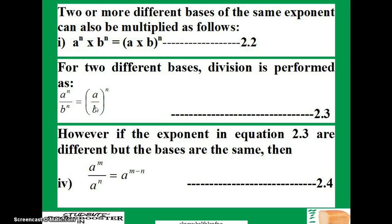However, if the exponents in equation 2.3, that's this law here, if the exponents are different but the bases are the same, then a raised to power m over a raised to power n equals a to the m minus n. The meaning here is that if you have division, the same base but different exponents, you just need to subtract them. So multiplication is addition, division is subtraction. Take note of that.